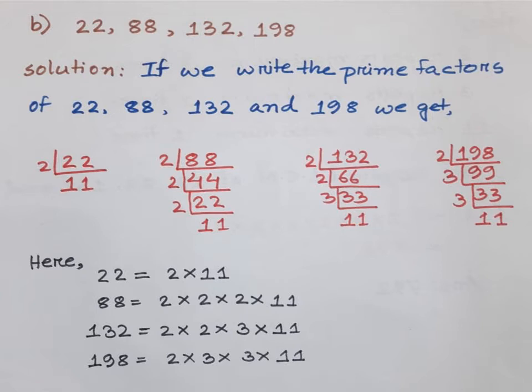The prime factors present are 2, 3, and 11. Now we check maximum occurrences: for 2 — first line has one 2, second line has three 2s, third line has two 2s, last line has one 2, so 2 appears at most three times. For 3 — it only appears in the last line (198) twice, so 3 appears at most two times. For 11 — it appears exactly once in each line, so 11 appears at most one time.